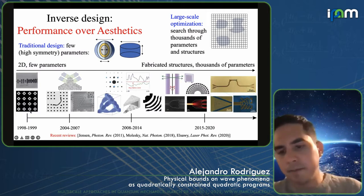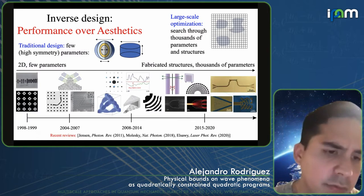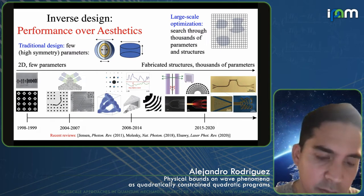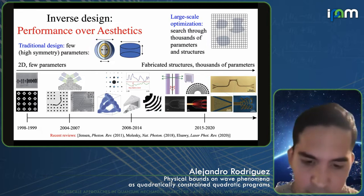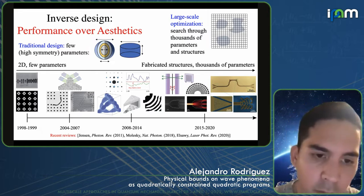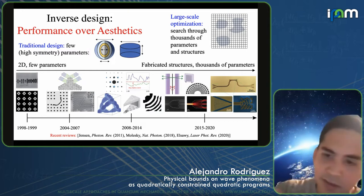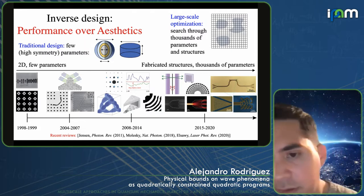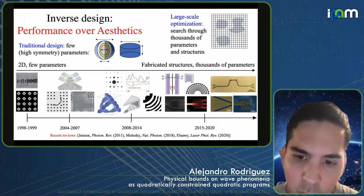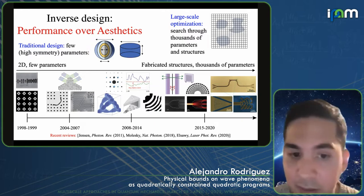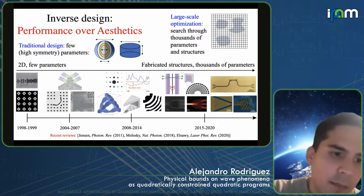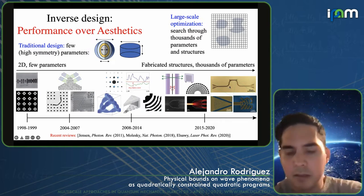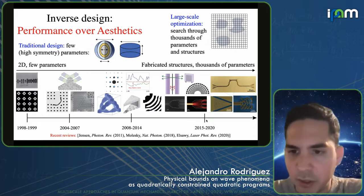There has been a buildup of use of these techniques. They're not new — people have been using inverse methods to design all kinds of wave systems, even in aerodynamical design; for instance, new Boeing wings are designed using inverse methods. But in electromagnetism, you really start seeing a development and application of these techniques toward the last decade or so, with increasingly more complicated and experimental realization of these systems.